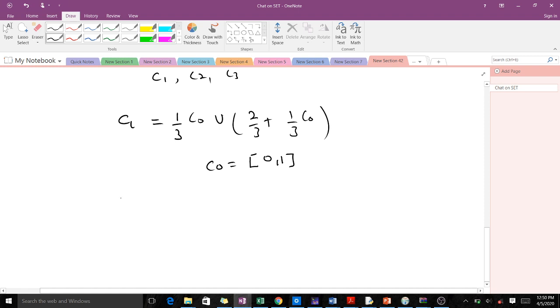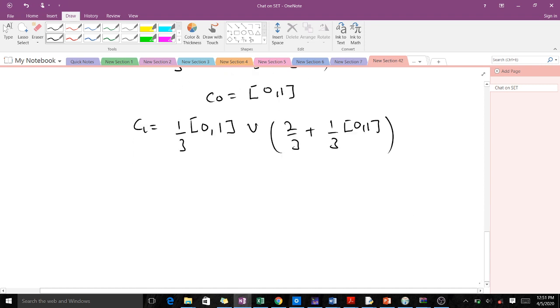So this means C_1 will equal (1/3)[0,1] ∪ (2/3 + (1/3)[0,1]). When we have this, what we do is divide by 3.